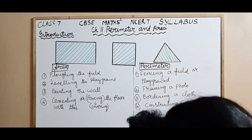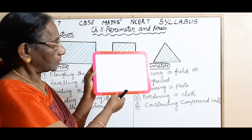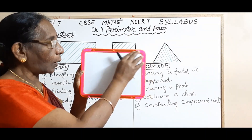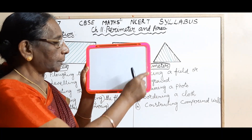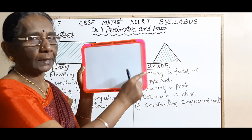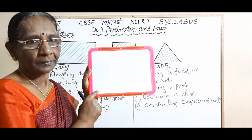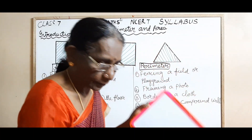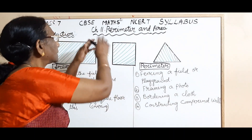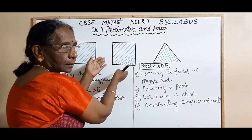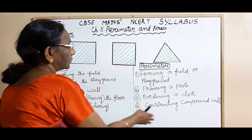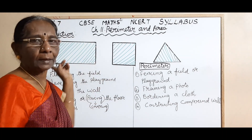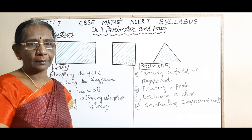If you take this small board, the white surface represents the area of this shape, and this pink color frame represents the perimeter. Perimeter is the length and the area is the inner surface. In the same way, if you consider this board, the inner white surface represents the area, and the outer frame — the total length of the outer frame — represents the perimeter.